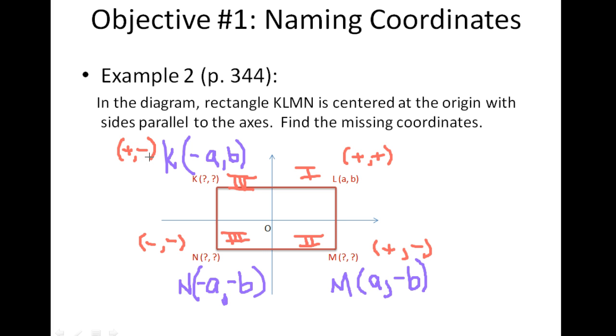So either strategy would have worked. You could have either used x and y from L to figure out the x and y of N and MK, or you could have simply looked at the variables it uses, A and B, and then applied the respective signs that are appropriate given which quadrant each of the points lie in. Either way would have worked.